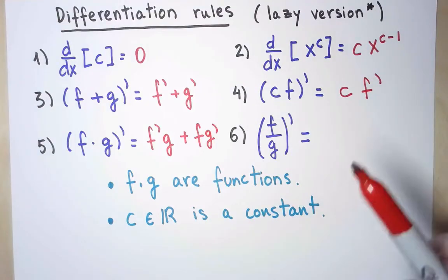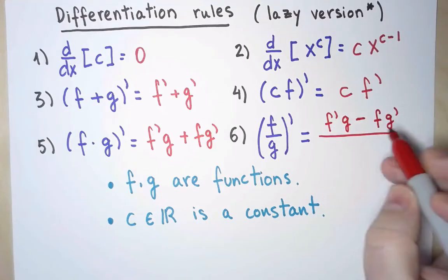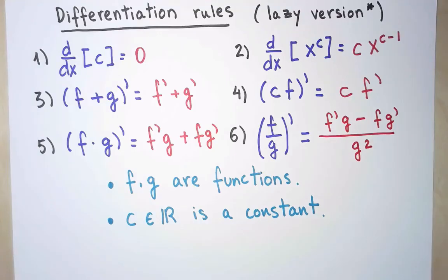And the derivative of a quotient, f over g, is f prime times g minus f times g prime over g squared. This last one requires that we do not divide by zero.